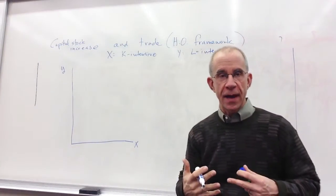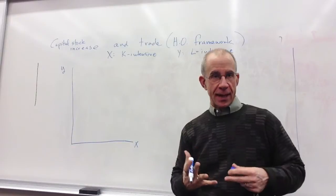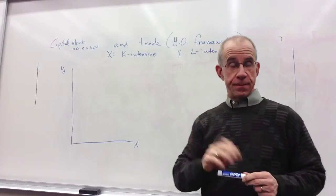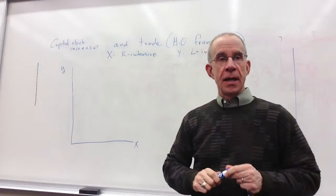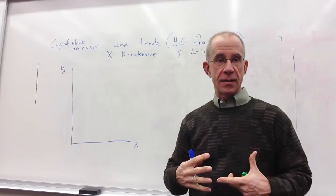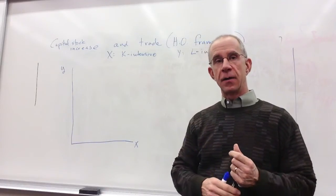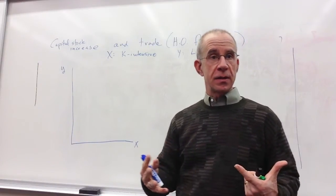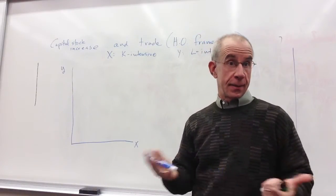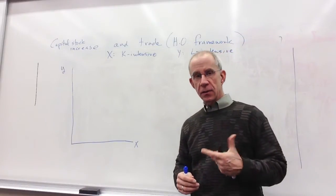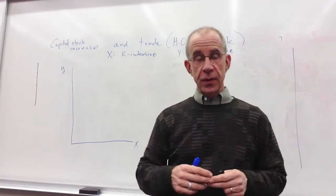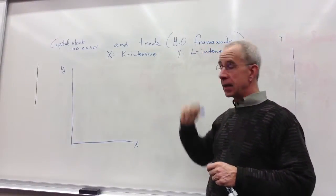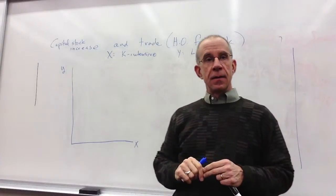Everything we've done up to this point, we've had a fixed level of labor and capital inside the economy. But it's clear that one of the really big changes over the last 30 years is not only that trade in goods has increased, but there's been an increase in the amount of physical capital, foreign direct investment that flows between countries, and also an increasing number of people that move across borders — immigration. So I'd like to look at some of the basic expectations within a neoclassical Heckscher-Ohlin framework when there is an increase in the capital stock.